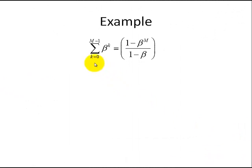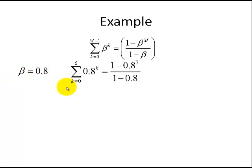Now we're going to do a numerical example of applying the finite sum formula going from 0 to m minus 1. For this example, we'll use again beta equal to 0.8, and we're going to sum from 0 to 6. Applying the closed form formula, we have a result of 3.951424.